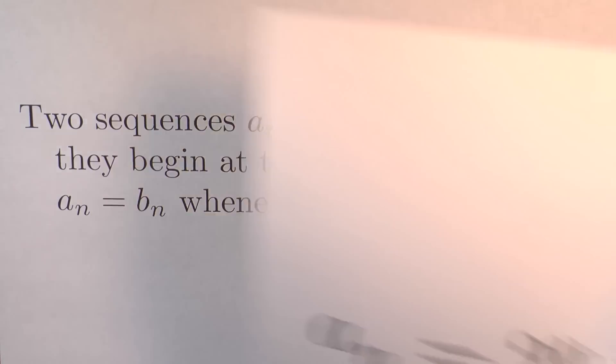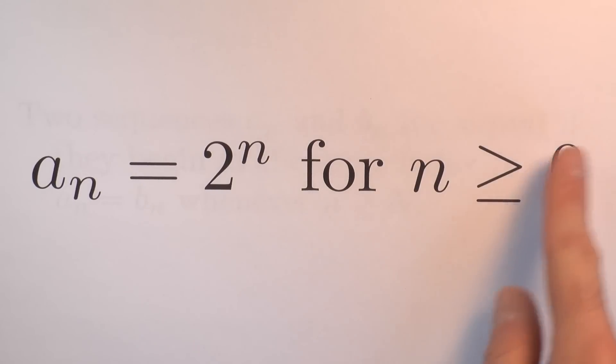Let's see how this works out in practice. Well, here's one sequence, A sub n. Here's the sequence that starts with a zeroth term and is defined by the rule that its nth term is 2 to the n.